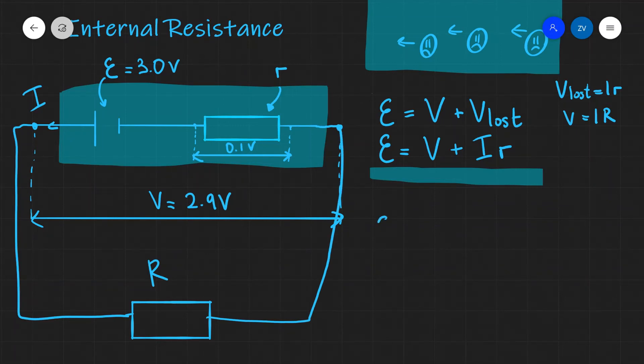When that's the case, the EMF will equal V, which is actually I times R, plus the lost voltage, which is I times lowercase r, the internal resistance.